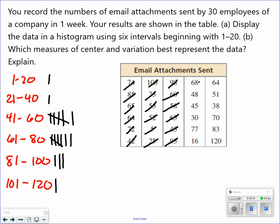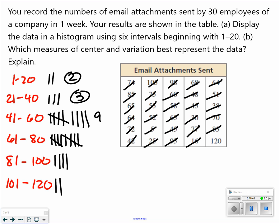48, 45, 30, 77, and 16. Last column now. 64, 64, 51, 51, 70, 83, and 120. So, again, tallying up each one of these. There's two in the first interval. Three in the second. Nine in the third. 10. 4. And 2.